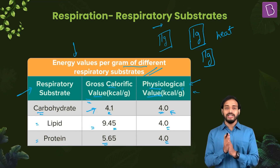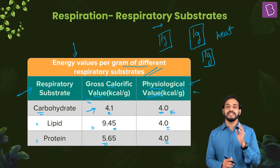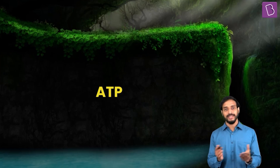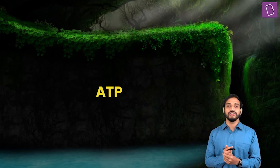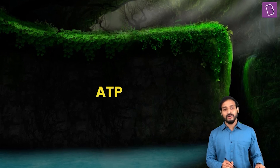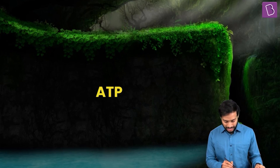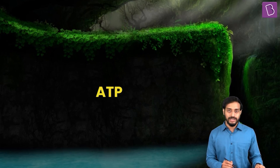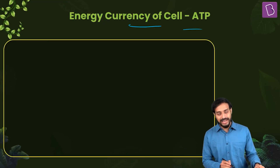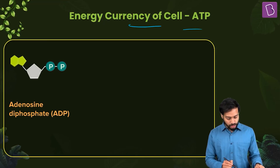The energy liberated in this process is in the form of ATP — adenosine triphosphate — which is the energy currency of the cell. This applies not only to us but to plants as well. ATP is the essential energy currency of the cell.